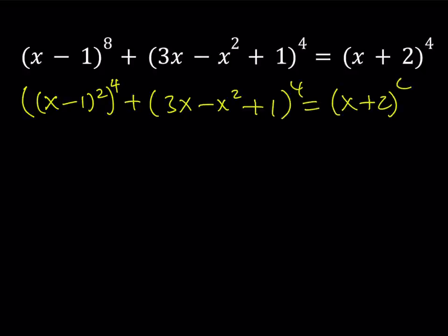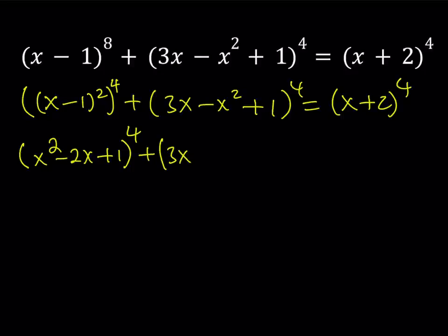Since (x-1)² can be written as x²-2x+1, we get: (x²-2x+1) to the 4th power plus (3x - x² + 1) to the 4th power, and that equals (x+2) to the 4th power.